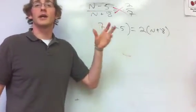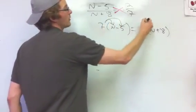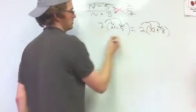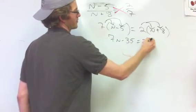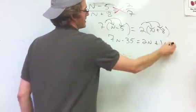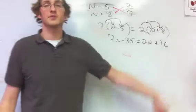Okay, so from right here, we just need to do our little rainbow arrows, and we're going to speed through this. 7n minus 35. Please don't make fun of my sign. That's rude. Plus 16. I mean, it's not really rude, because it wasn't a real start. 7n minus 35 equals 2n plus 16.